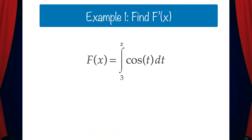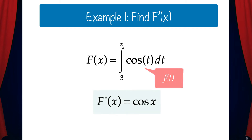Let's do an example to see how this works. Suppose capital F of x equals the integral from 3 to x of cosine t dt. This means that little f of t equals cosine t, and by the second fundamental theorem of calculus, capital F prime of x equals cosine x. All we had to do was literally place the x into the t of the cosine function.